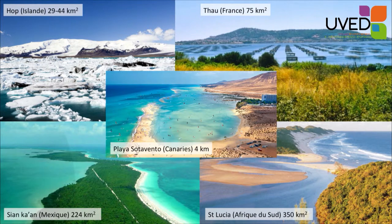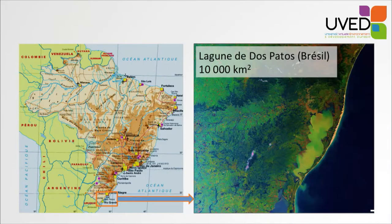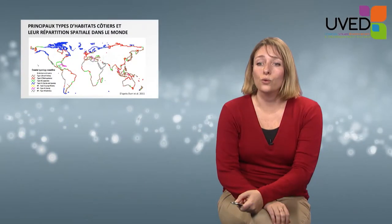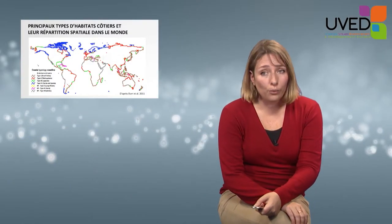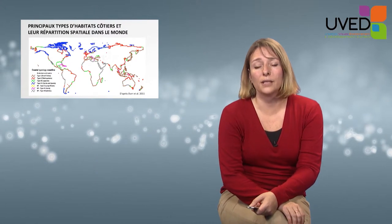As you may see from this picture, the area ranges from a few square meters to several thousand square kilometers. Here we have the Dos Patos Lagoon in Brazil, which can be seen even from outer space.